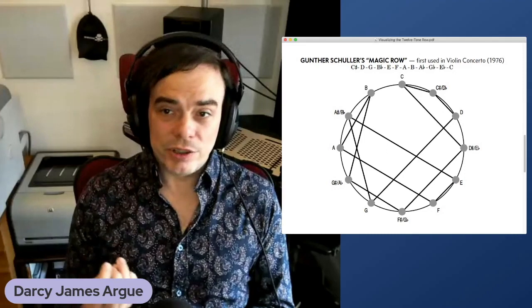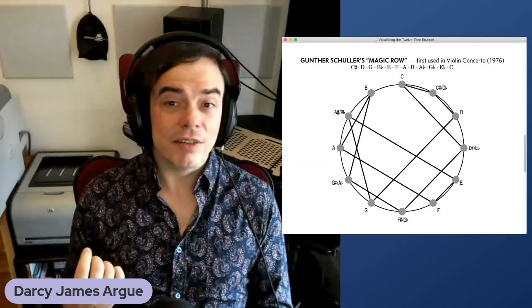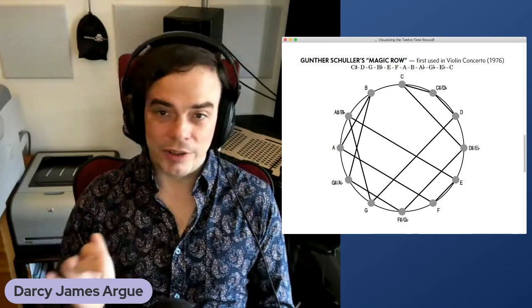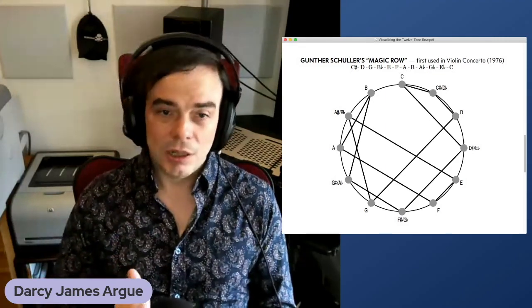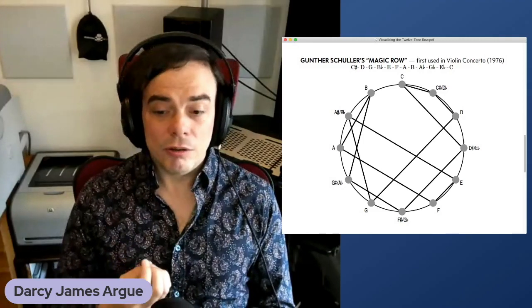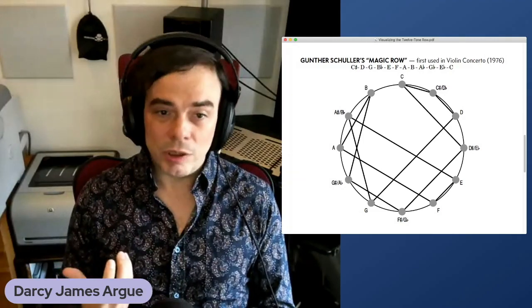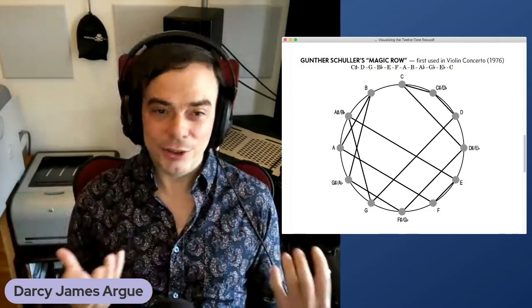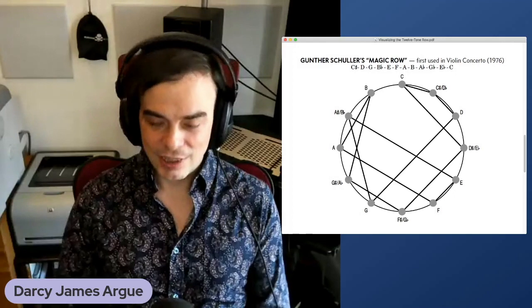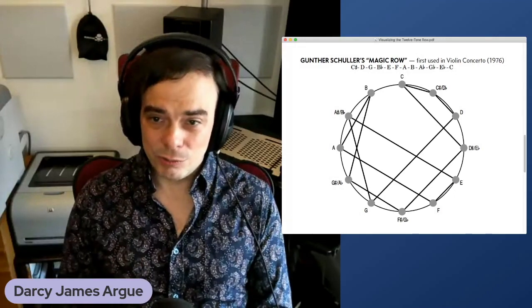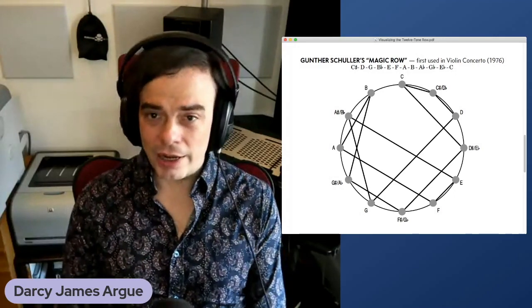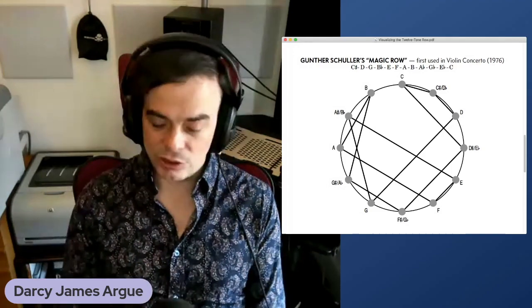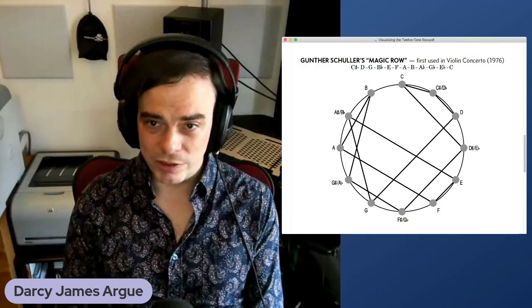Let's look at another row that may be familiar to jazz musicians. This one is Gunther Schuller's Magic Row. This is a row that he used first in his violin concerto in 1976, and then he used it in every single piece he wrote after that. He used this one row exclusively. You can hear versions of this row in the music of Rand Blake, and in Joe Livano and in other artists who are in the Gunther Schuller extended universe. So you can see this row has properties that are very helpful for constructing jazz chords. So this row sounds like this.